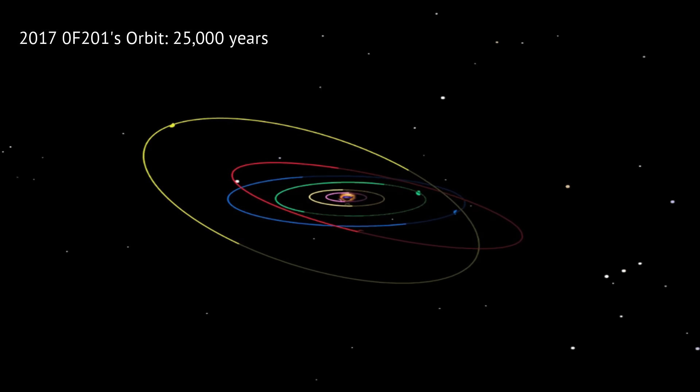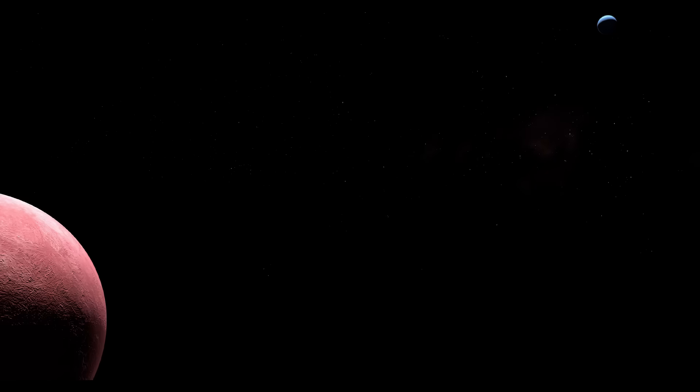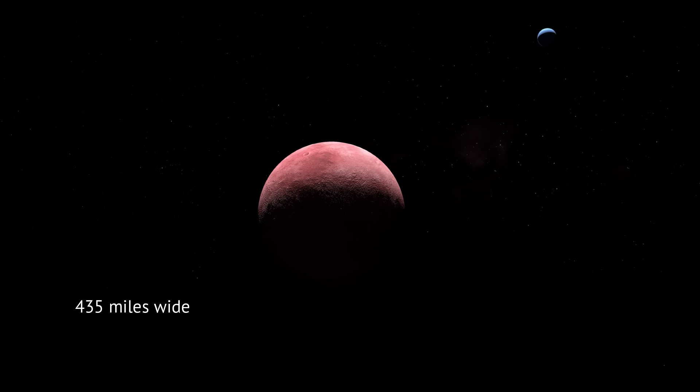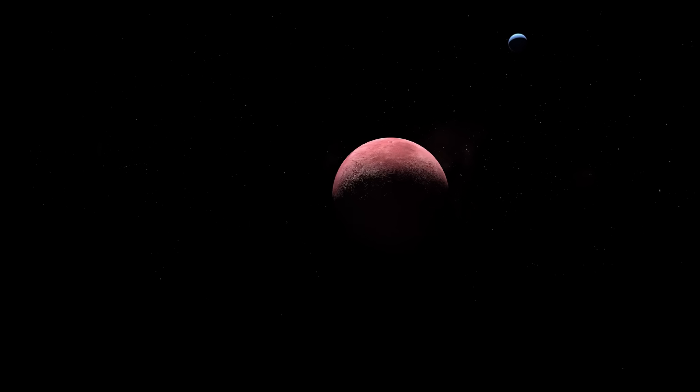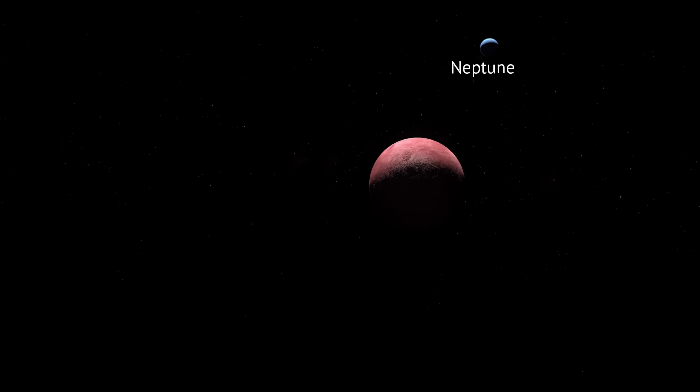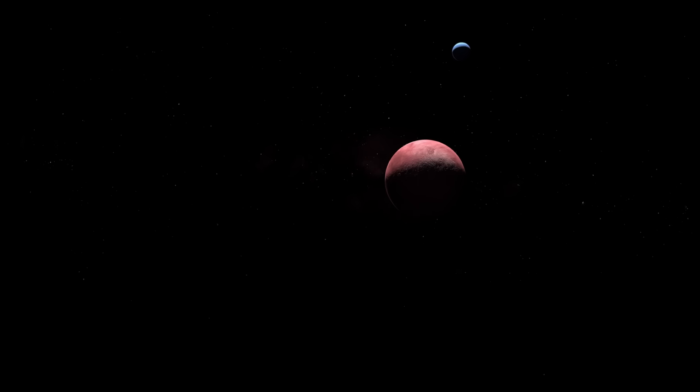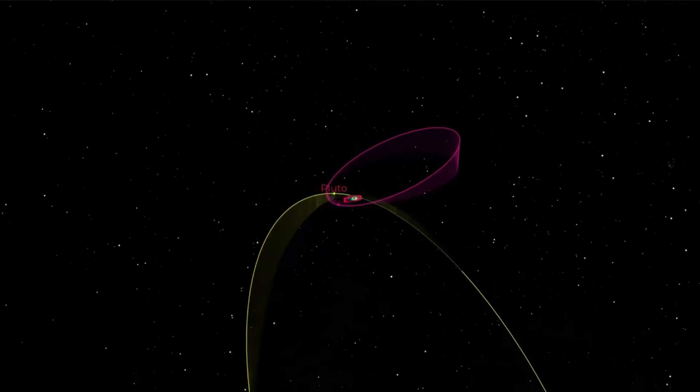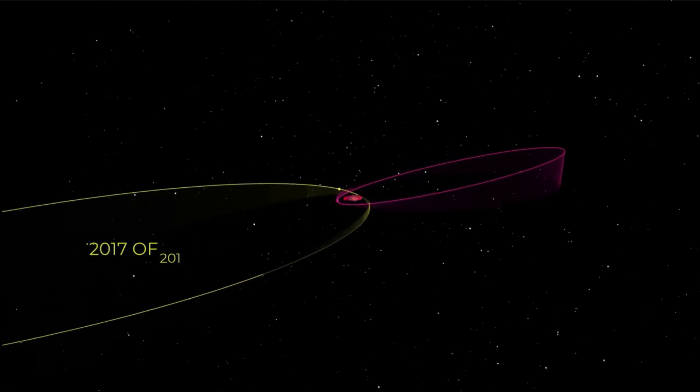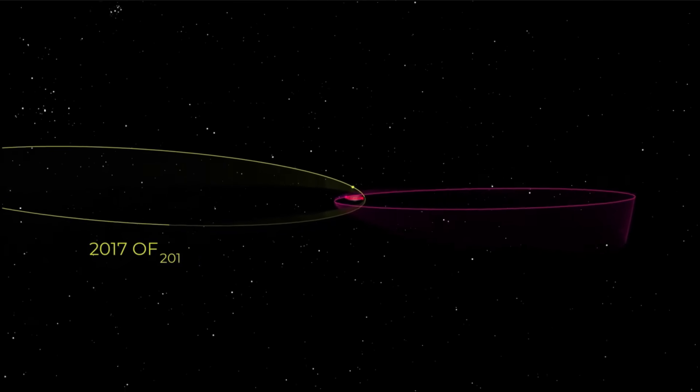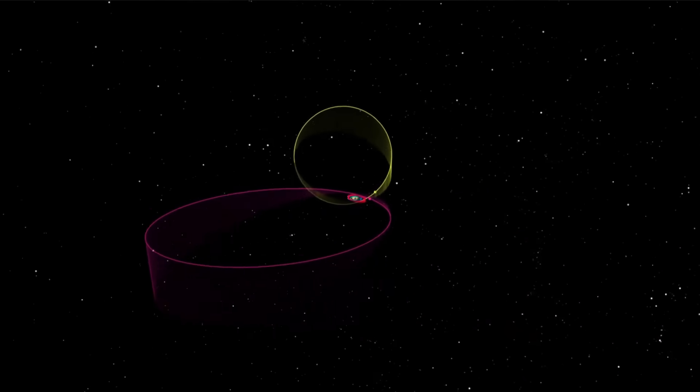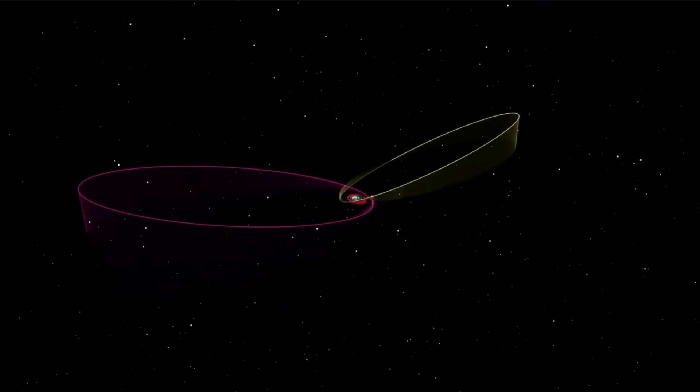That's not just far, that's outer Oort cloud territory. The object itself is estimated to be around 700 km wide. And the interesting thing is, it's not interacting with Neptune. It's just out there. No one's sure how an orbit like this even formed. One idea is that 2017 OF 201 had a close run-in with something big. Maybe a planet that flung it into this stretched-out path.